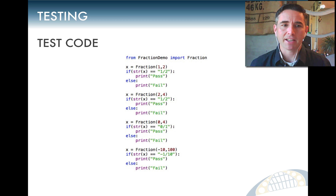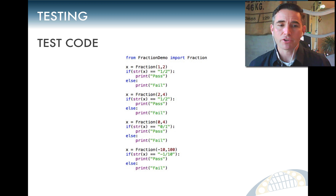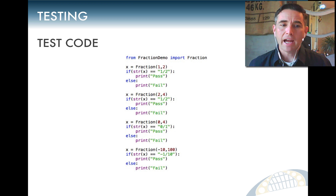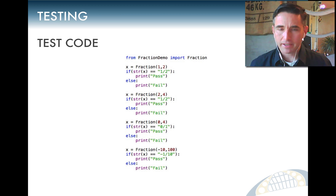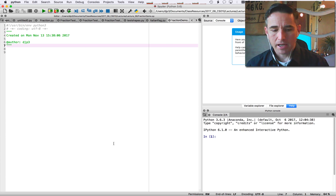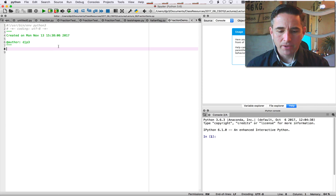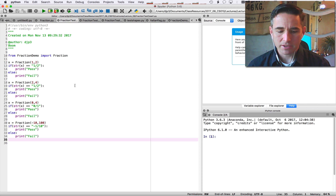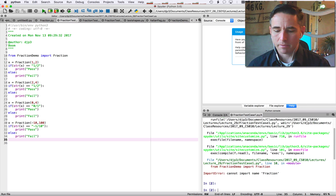Our test code will create a fraction of one over two and verify the string representation comes back as '1/2'. Two over four should reduce to one over two, zero over four should standardize to zero over one, and negative ten over 100 should standardize to minus one over ten. Let's open Spyder and start coding.